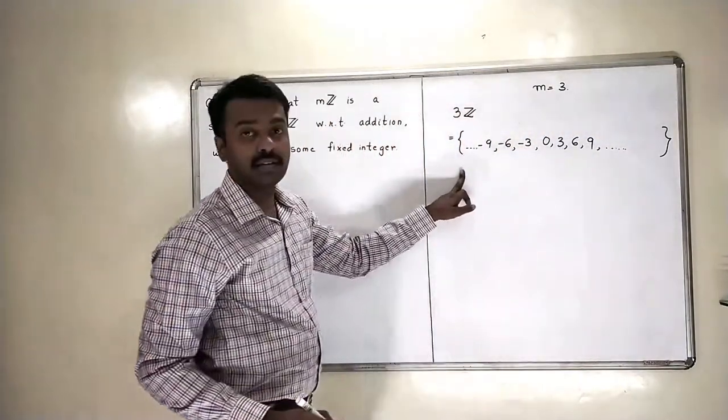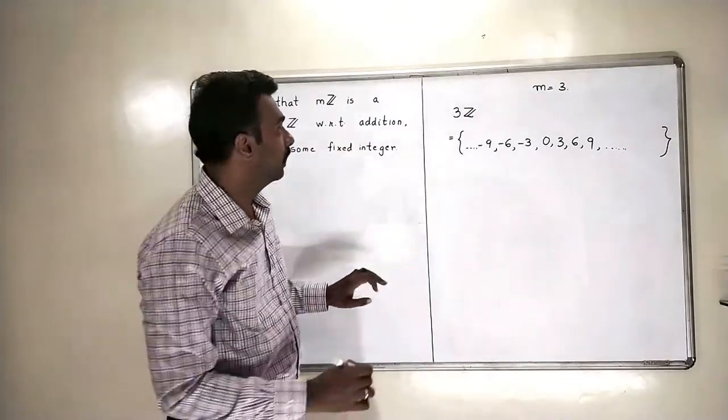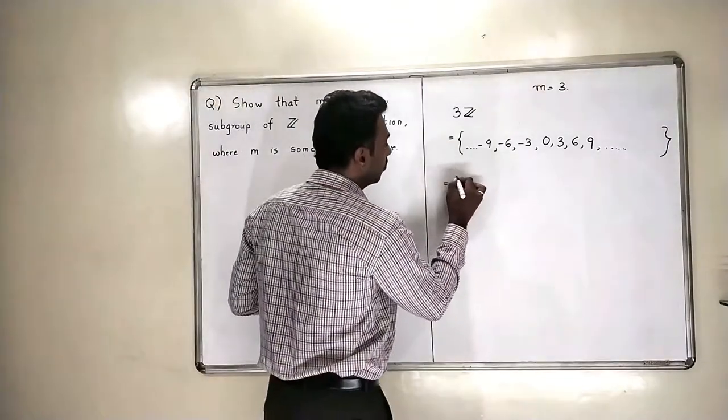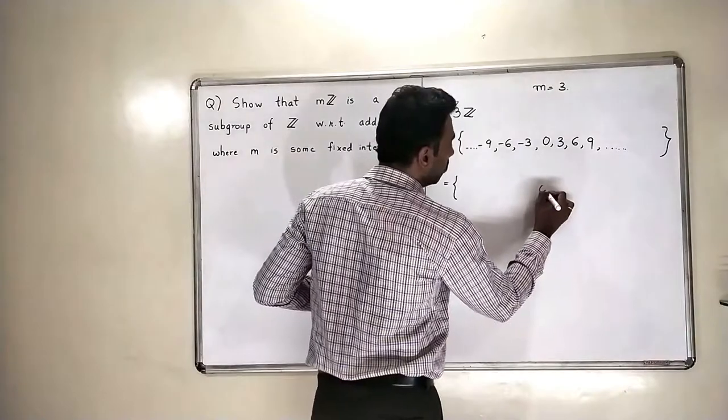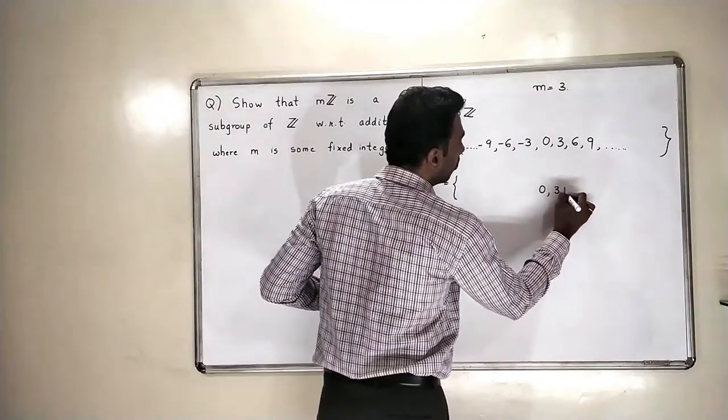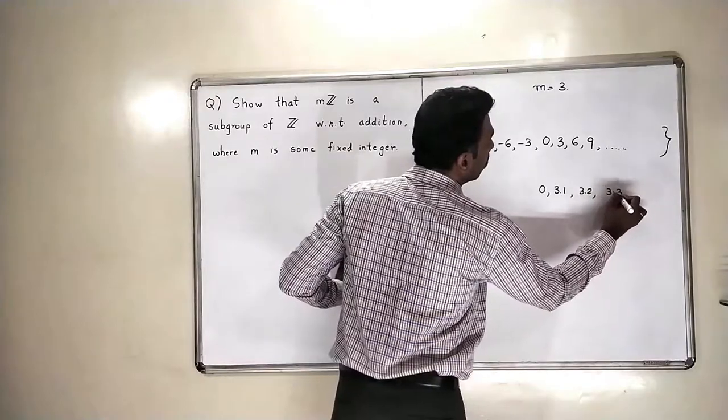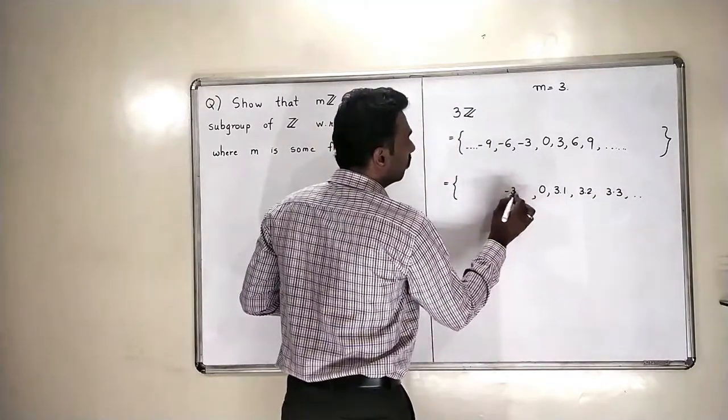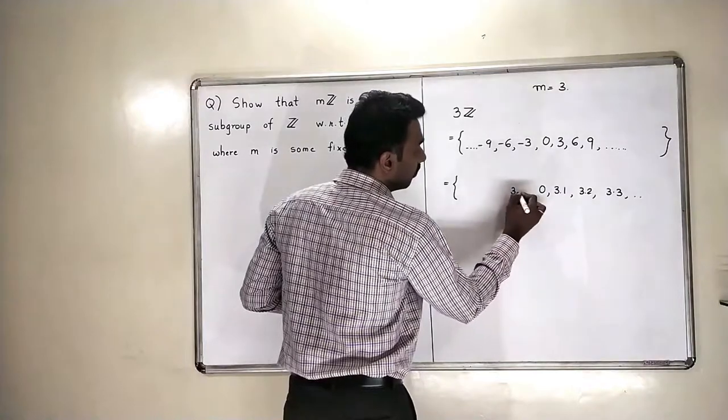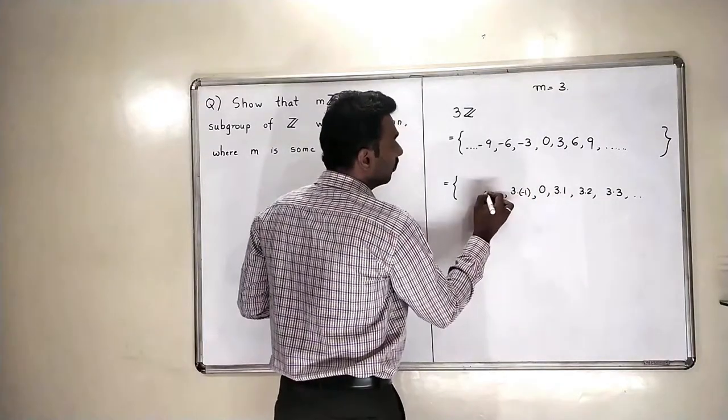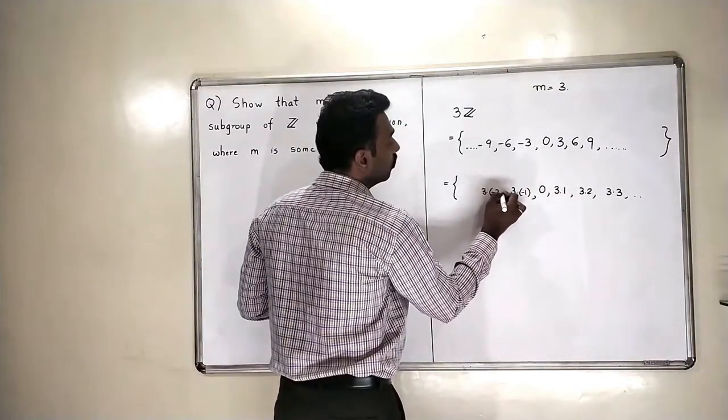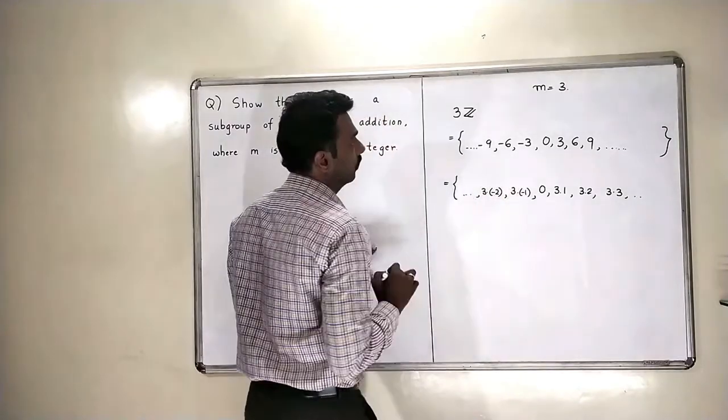So, this is the set 3Z. Now, if you look at it carefully, this I can write it as 0, 3 times 1, 3 times 2, 3 times 3 and so on. Minus 3 times, so 3 times minus 1, 3 multiplied by minus 2 and so on.